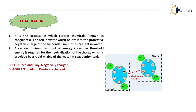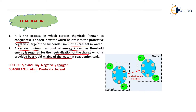Coagulation is the process in which certain chemicals known as coagulants are added in water, which neutralize the protective negative charge of the suspended impurity present in water. The impurities will be of silt and clay and they will generally be negatively charged. When we add coagulant in the form of alum, the alum will be positively charged. When positive and negative react with each other, charge neutralization takes place. A certain minimum amount of energy known as threshold energy is required for neutralization of the charge, which is provided by rapid mixing of the water in coagulation.